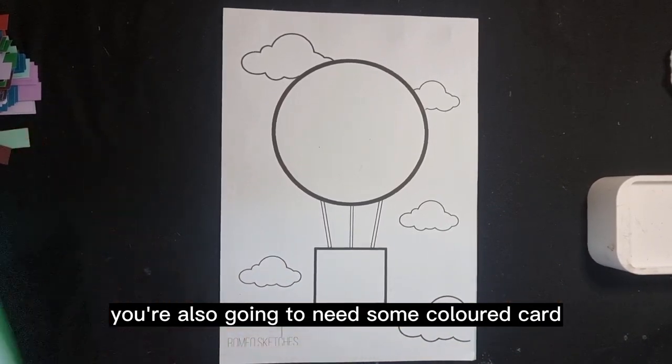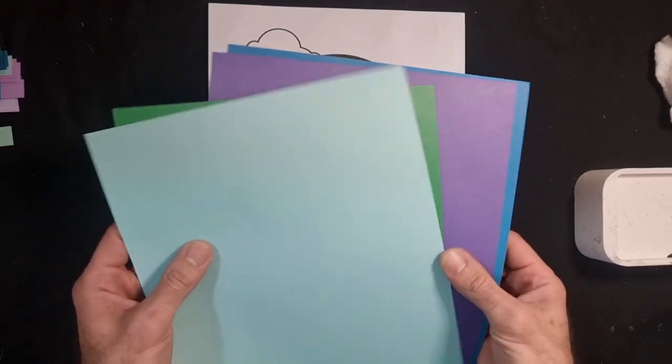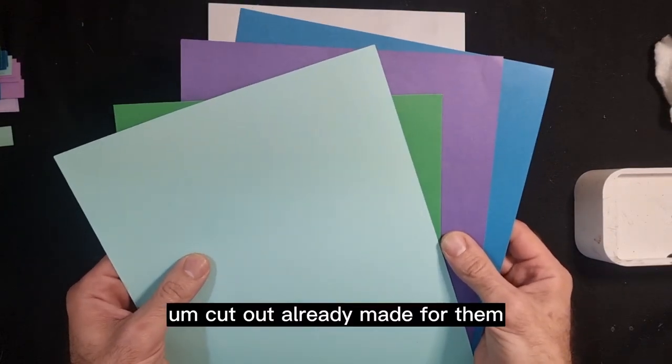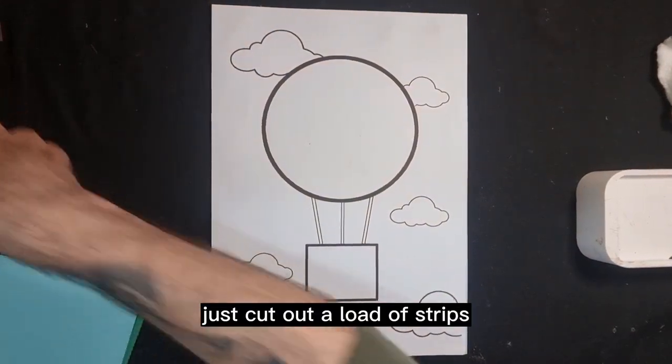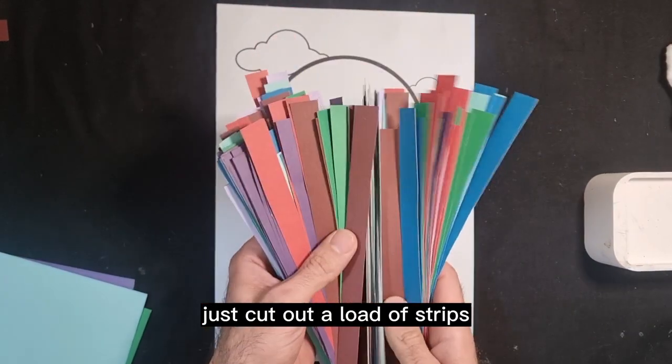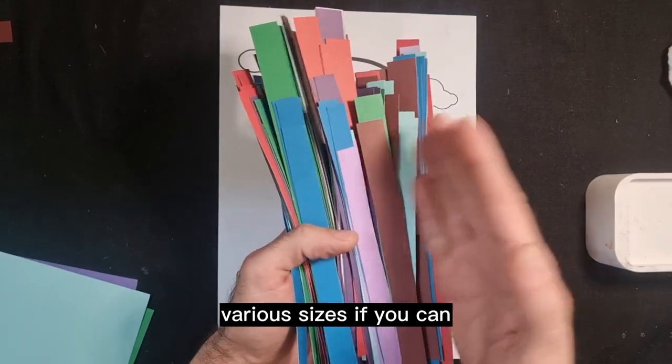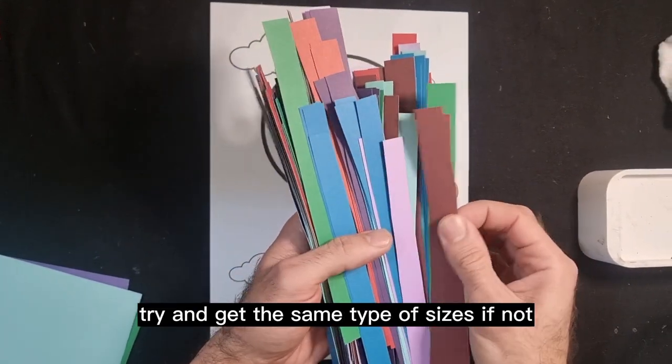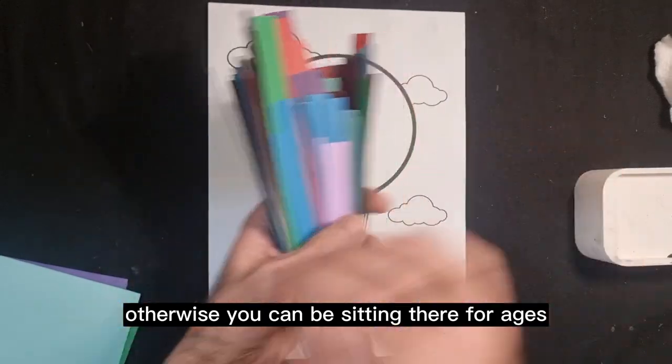You're also going to need some colored cards. What we're going to do is I already have these already sort of cut out, already made for them. So some colored card, and then what you want to do is just cut out a load of strips, cut out all various different colored strips, various sizes if you can. Try and get the same type of sizes if not, otherwise you can be sitting there for ages trying to measure each one and then cut it out.